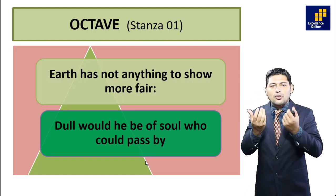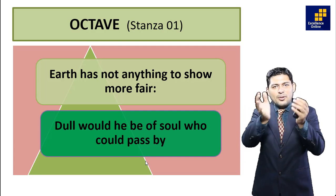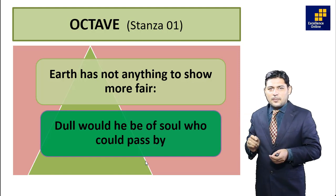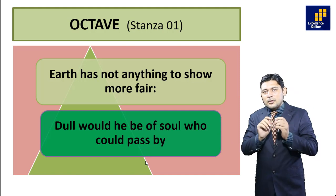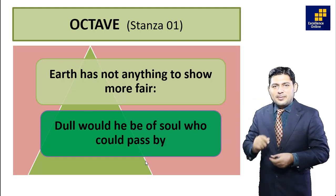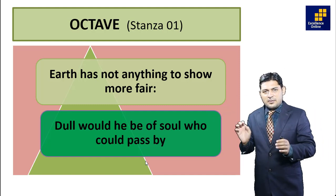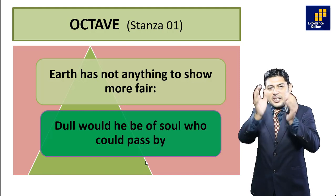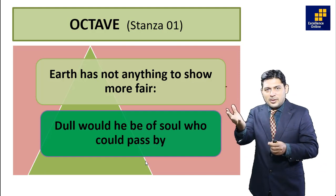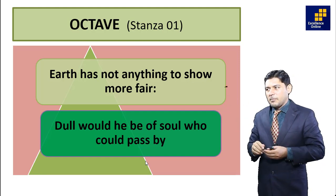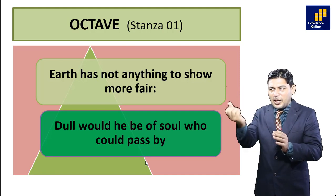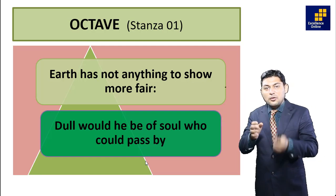The first lines state: 'Earth has not anything to show more fair.' Earth means the seven seas and seven continents, and 'fair' means beautiful — it is a kind of exaggeration. Those persons who could pass by this beauty without being inspired are like dead people. This means the Westminster Bridge is more beautiful than anything else in the world, and those who are not inspired by it are considered dull of soul.